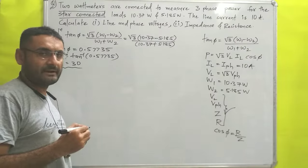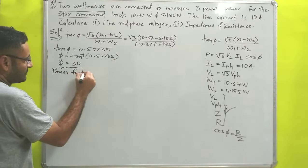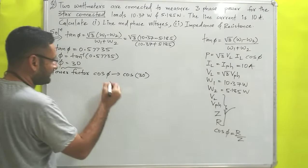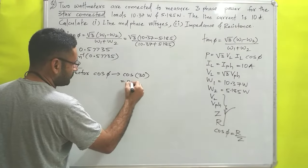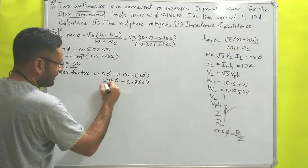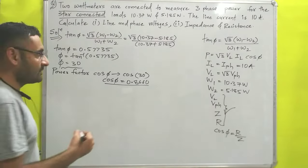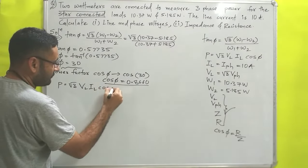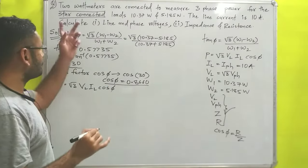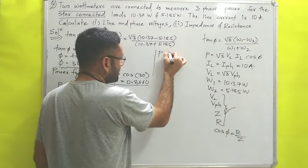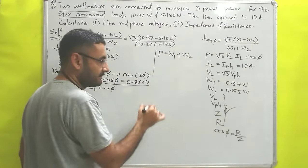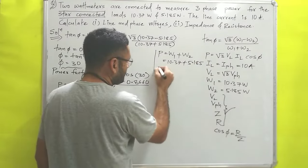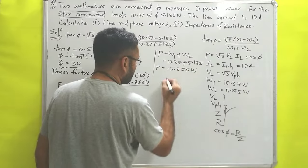Now that we have φ, we can find the power factor. Power factor = cos φ = cos 30° = √3 / 2 ≈ 0.8660. Next, total power of the system equals the algebraic sum of both watt meter readings: P = W1 + W2 = 10.37 + 5.185 = 15.55 watts.